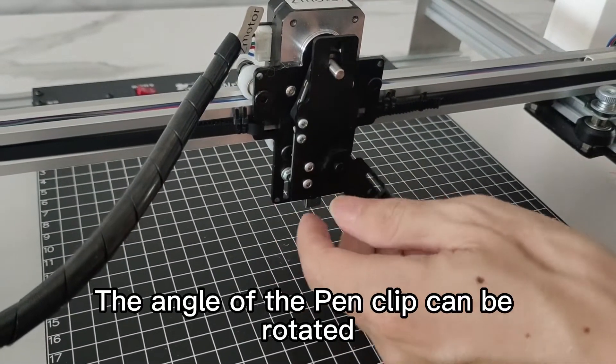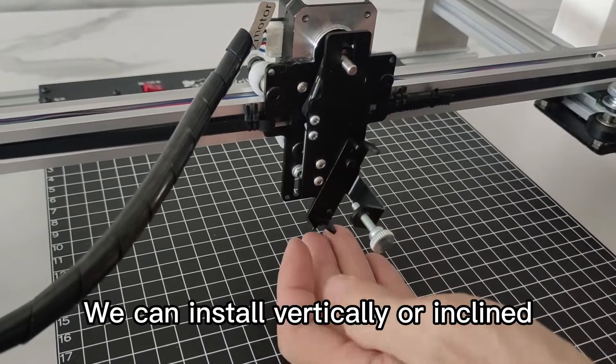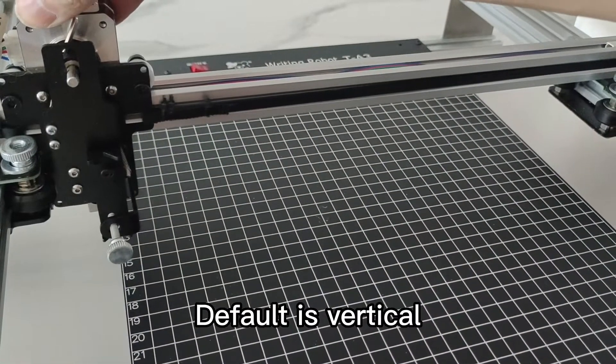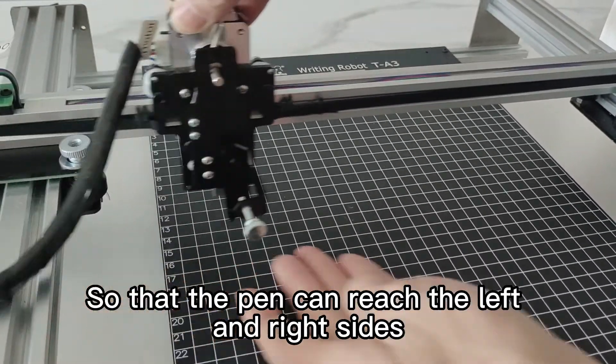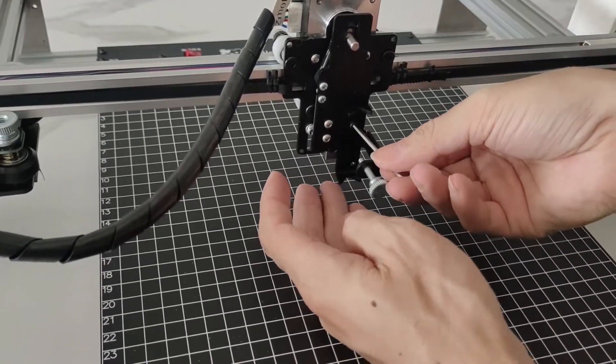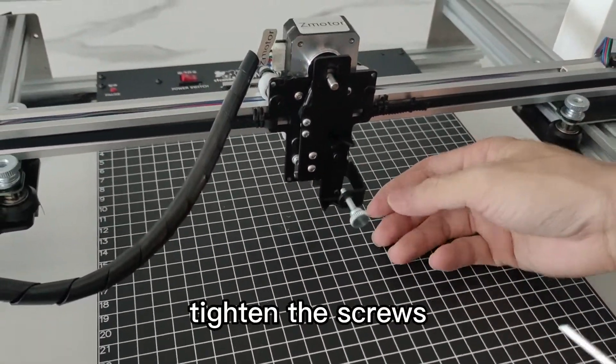The angle of the pen clip can be rotated. We can install vertically or inclined. Default is vertical so that the pen can reach the left and right size. Tighten the screws.